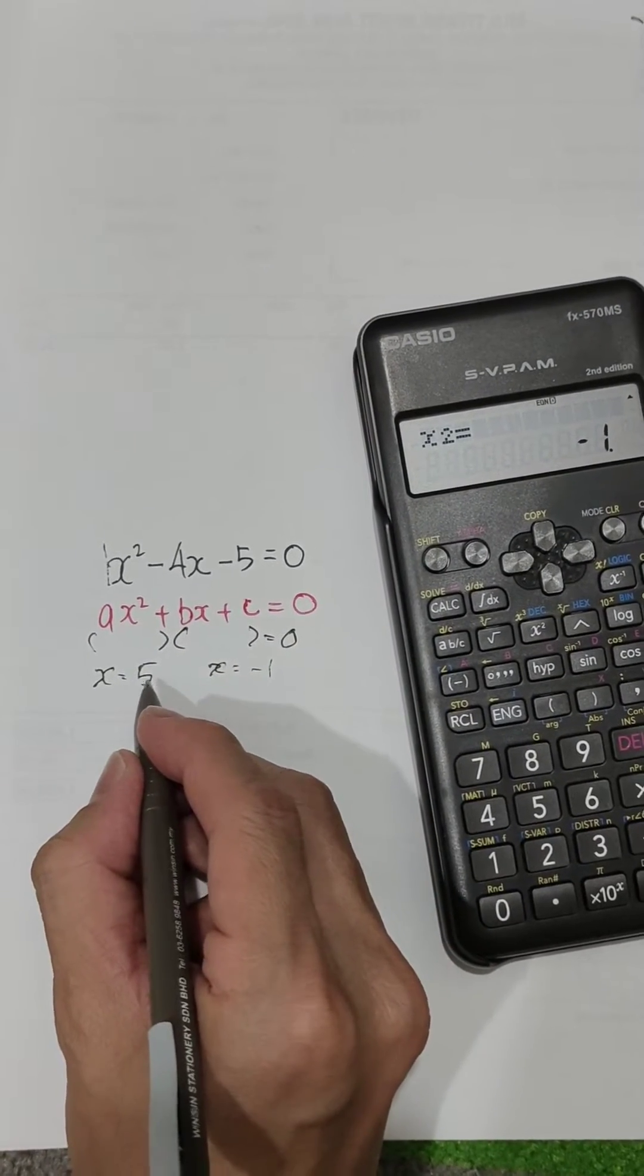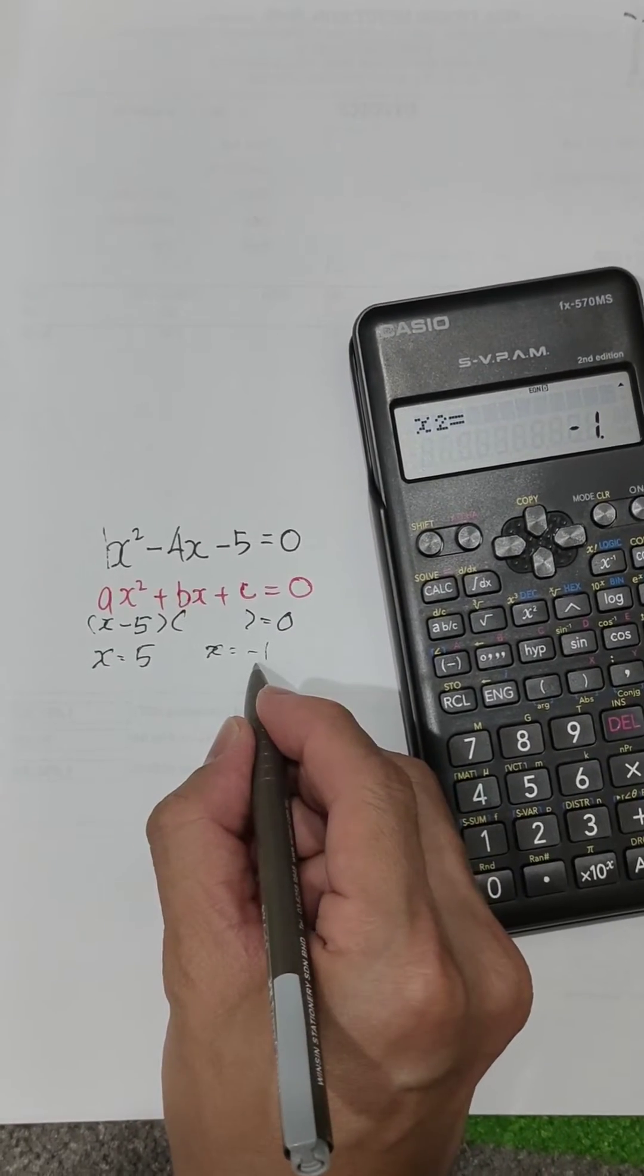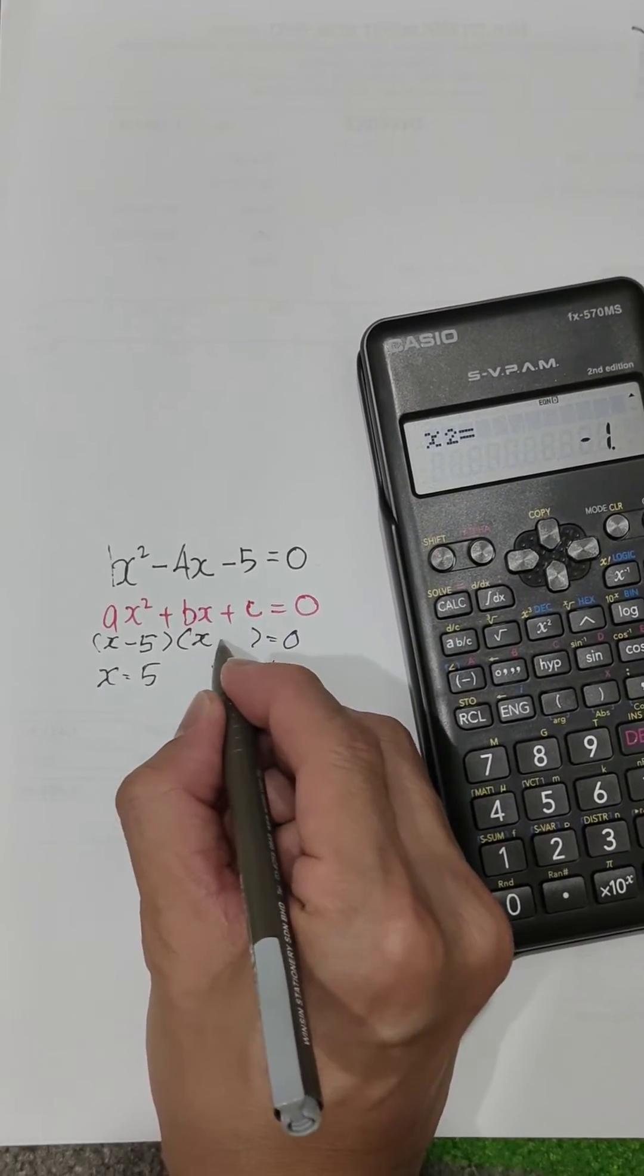So if you get 5, if it's a positive 5, you write negative. If it's a negative answer, you write positive.